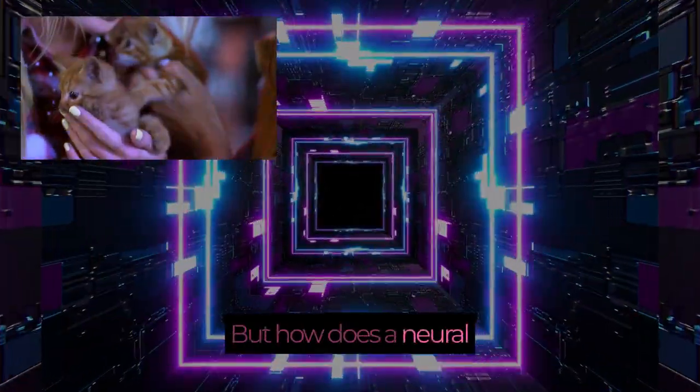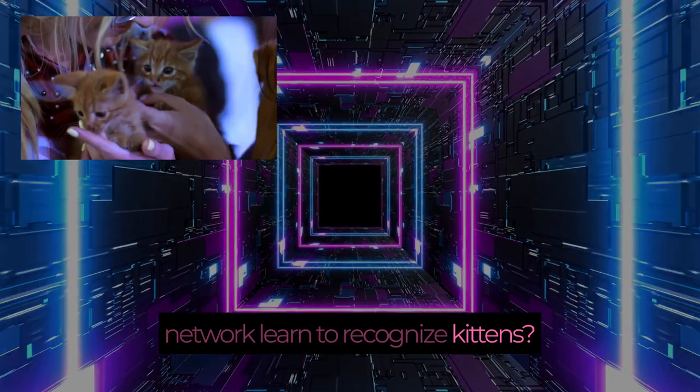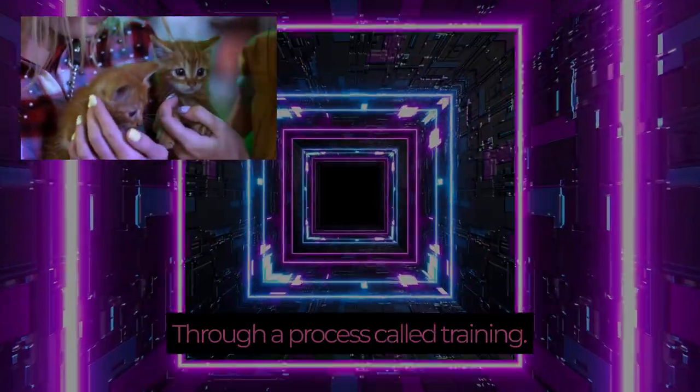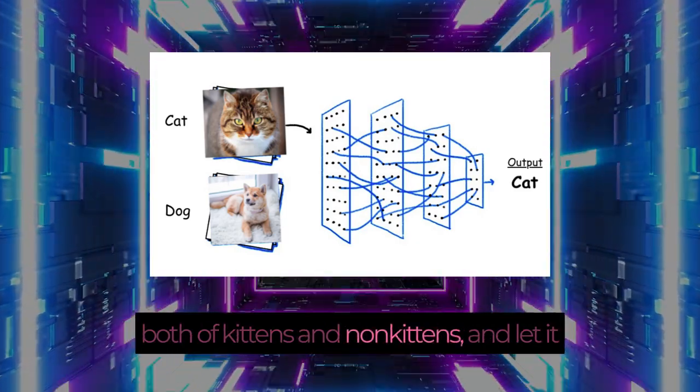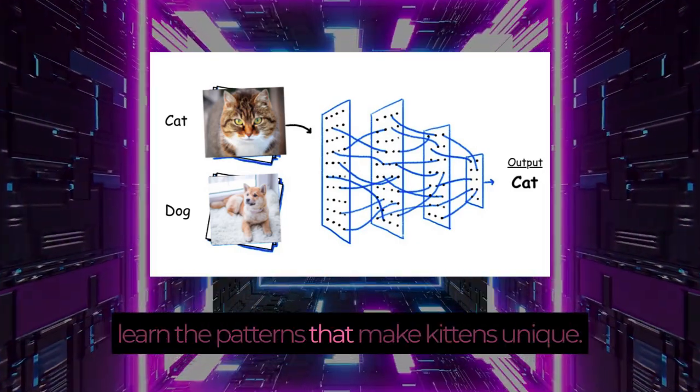But how does a neural network learn to recognize kittens? Through a process called training. We feed the network tons of labeled images, both of kittens and non-kittens, and let it learn the patterns that make kittens unique.